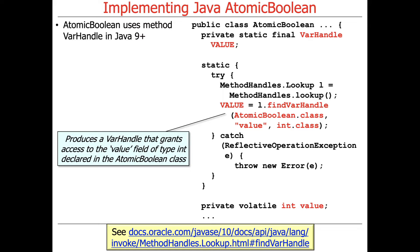Up here, you can see that we have a field called VarHandle, and we're going to use this static initializer block to apply Java reflection. It's going to look up where the value field resides relative to the start of an AtomicBoolean object, and it's going to store it into something called a VarHandle — by saying: go look in AtomicBoolean, find the value field, and treat it as an int.